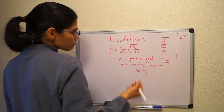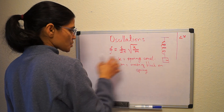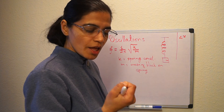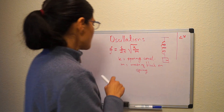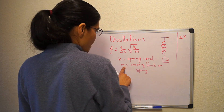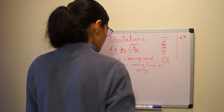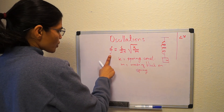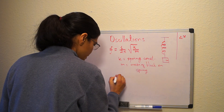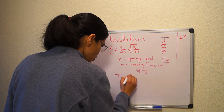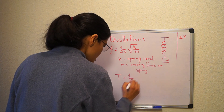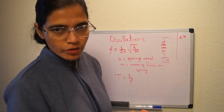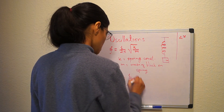Frequency depends on the spring constant — which has to do with the material the spring is made of — and on the mass. Once we have the frequency, we can calculate the period using T = 1/f, and vice versa.